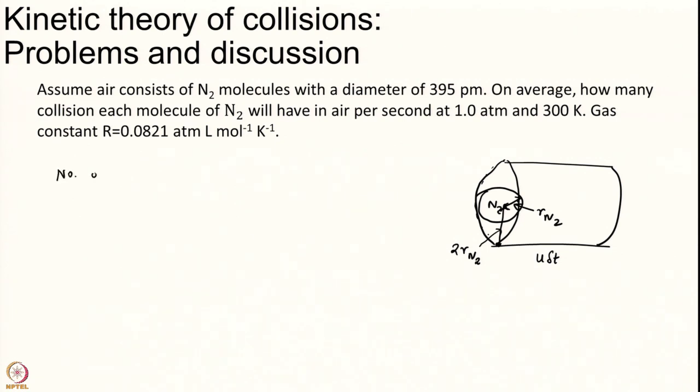Number of collisions in time delta T will be equal to volume of cylinder N2 into the density of nitrogen.